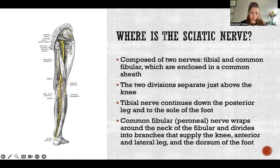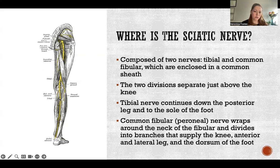We can see in the picture here this big thick yellow piece — that is the sciatic nerve traveling all the way down. Just before we get to the knee, it separates into the tibial nerve, which keeps going all the way down in the calf and then loops around and goes down to the sole of the foot.